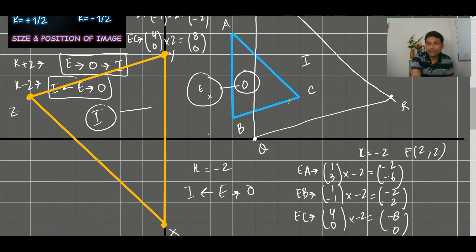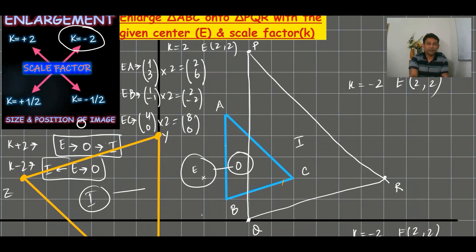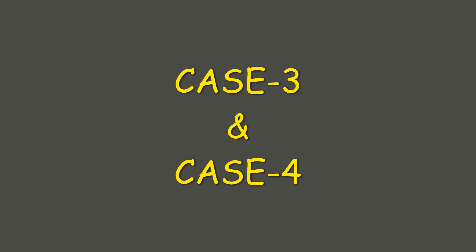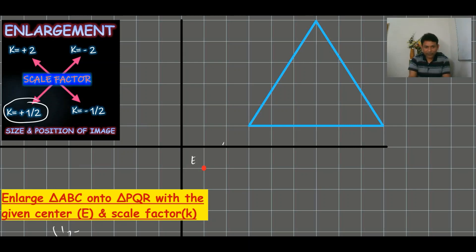Next, I am going to discuss when the scale factor is positive one-half or minus one-half, and what is going to happen to the size and position of the image. This is the third case: K is plus one-half. Enlarge triangle ABC onto PQR with center (1, -2) and scale factor positive one-half.